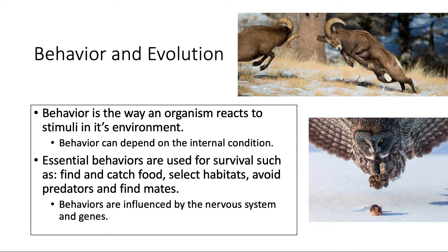Behavior can also depend on their internal condition. It can be as simple as a dog being alert and looking in a direction, or as complex as animals washing their food before they eat it. You have essential behaviors — those which are used for survival, such as finding and catching food, selecting habitats, avoiding predators, and finding mates. Here you have a ram — this is how they battle for mates, clashing their horns, and the winner gets the mate. Here you have an owl and a mouse — I think you understand that one.